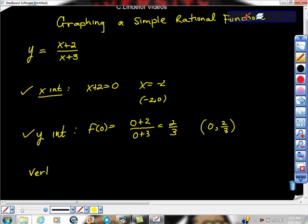Yeah, vertical asymptote. How do you find a vertical asymptote? Exactly, so the denominator equals 0.